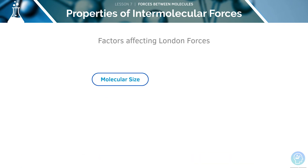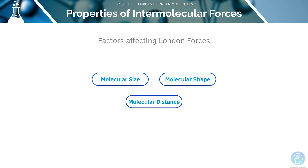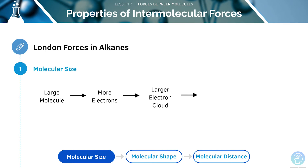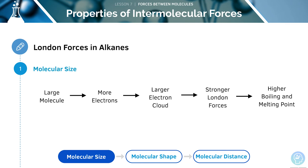The strength of the London forces is determined by three factors: molecular size, molecular shape, and molecular distance. A larger molecule contains more electrons and therefore larger electron clouds. The greater the number of electron clouds, the stronger the induced dipole-dipole forces. This means that more energy is required to break those forces, meaning that the boiling and melting points will be higher.